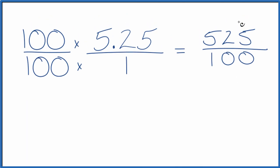So 25 would go into both 525 and 100. 25 into 525, that equals 21. And then 25 into 100, that equals 4. So we end up with 21 fourths. 5.25 equals the fraction 21 fourths.